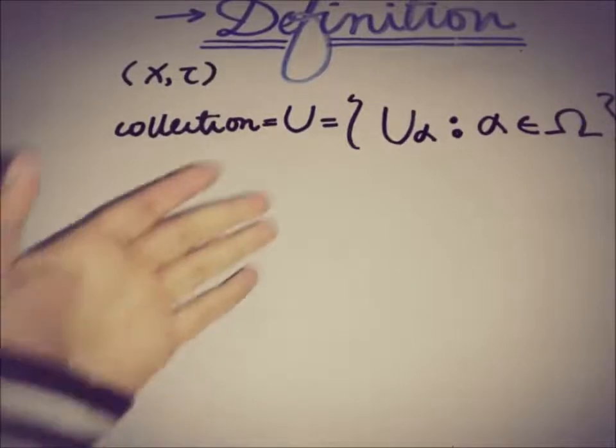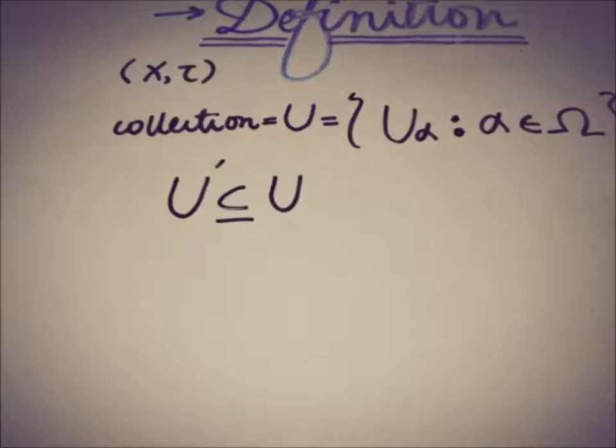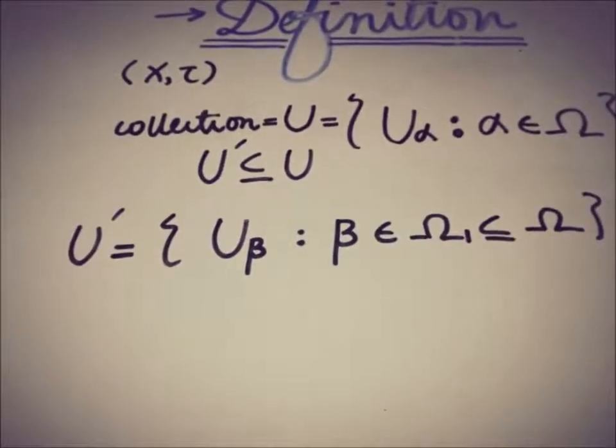Then this collection u is said to satisfy the finite intersection property if it has a finite subcollection, call it u prime, that is finite subcollection of u. And we can write it as u prime as u beta where beta is also finite.